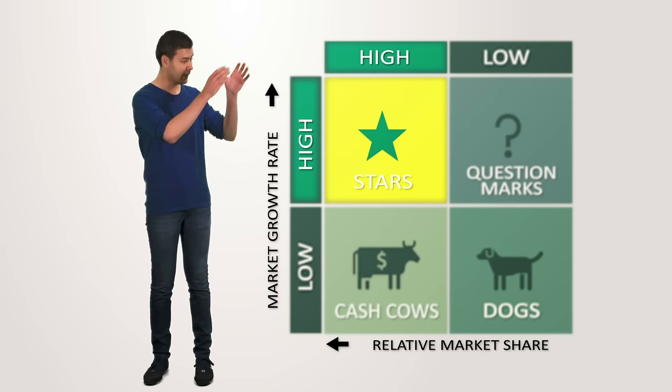This excess cash is supposed to be milked from the cash cow to invest in other business units elsewhere in the BCG matrix, typically stars and question marks. Cash cows ultimately bring balance and stability to a portfolio.